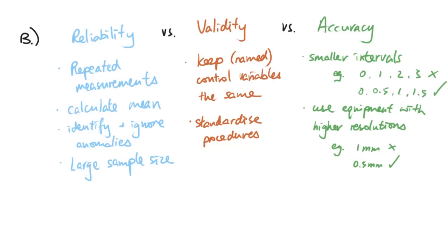This is a very typical exam question worth two to three marks, so it's really important to know how to improve each of these. You will not be asked to define reliability, validity, or accuracy, but you will be asked to explain how to improve them or how to ensure your data is reliable, valid, or accurate.